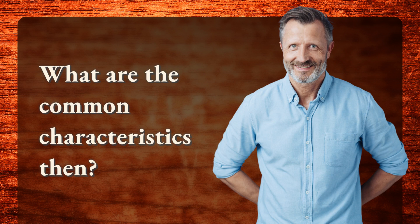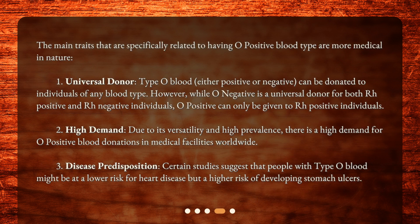What are the common characteristics then? The main traits specifically related to having O positive blood are more medical in nature. First, universal donor: type O blood, either positive or negative, can be donated to individuals of any blood type. However, while O negative is a universal donor for both RhD positive and RhD negative individuals, O positive can only be given to RhD positive individuals.